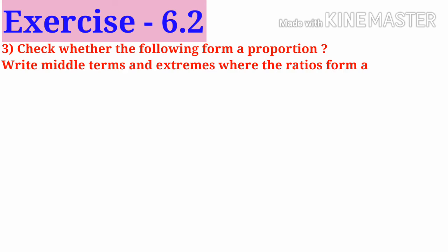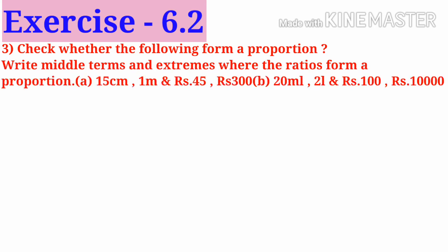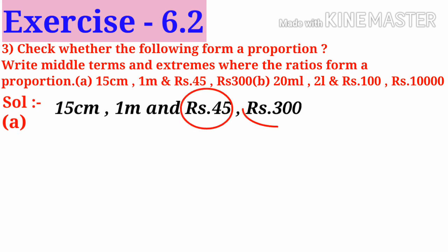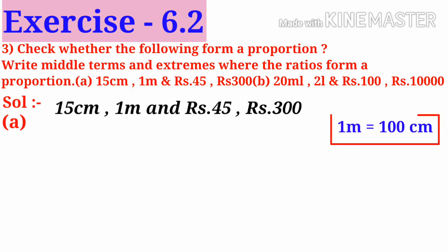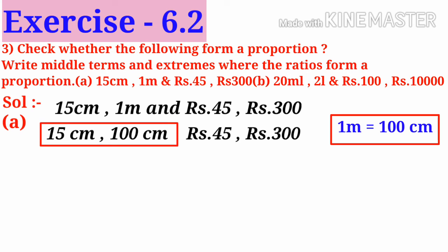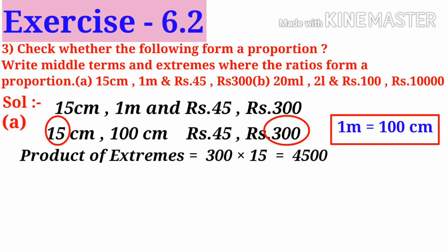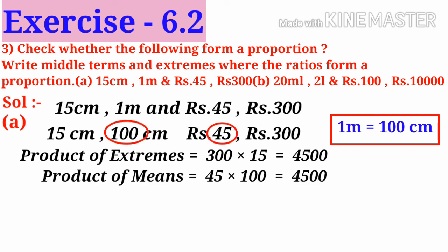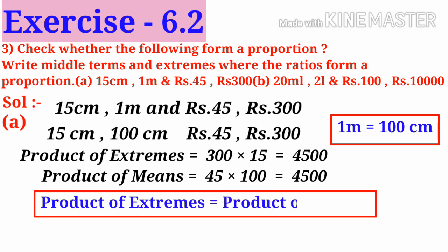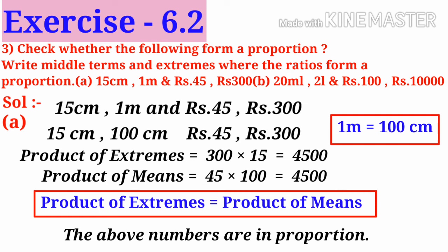Number 3: Check whether the following form a proportion. Write middle terms and extremes where the ratios form a proportion. A: 15 centimeters, 1 meter, and 45 rupees and 300 rupees. Observe that 45 rupees and 300 rupees are both in the same quantity, so they form a ratio. Whereas 15 centimeters and 1 meter are in different quantities — one is in centimeters, another in meters. So to make it a ratio, write 1 meter as 100 centimeters. Now 15 centimeters and 100 centimeters are in the same quantity and form a ratio. Take the product of extreme values: 300 into 15 is 4500. Take the product of the middle values: 45 into 100 is 4500. Both are equal, so product of extremes is equal to product of means. So the above 4 numbers are in proportion.